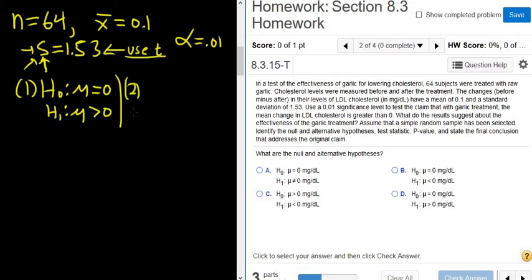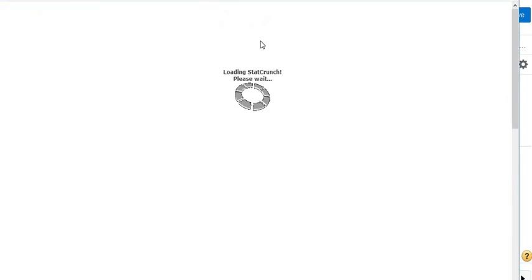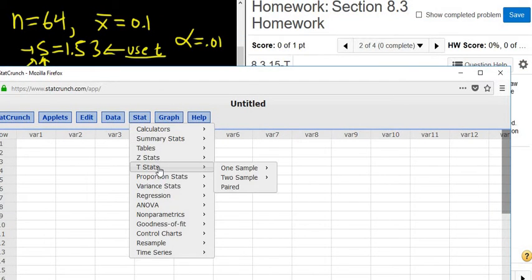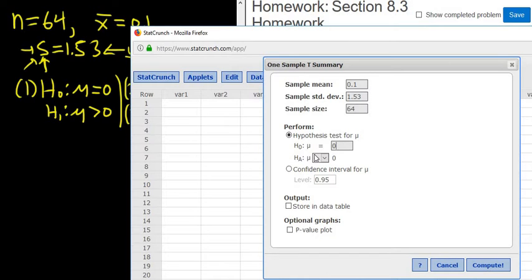Steps 2 and 3 are always done in StatCrunch. In this problem they did not give us the population standard deviation. So we're going to use t. So we go to question help and StatCrunch. I'm going to click this to make it expand. And so we go to stats, t-stats, one sample with summary. It's always with summary if you have a summary of the data. If you have a bunch of numbers, then you use with data. Let's enter the information. So the sample mean is 0.1. The sample standard deviation is 1.53. And the sample size is 64. Good stuff. We leave it at 0. And we just change this to greater than. Let's try it.